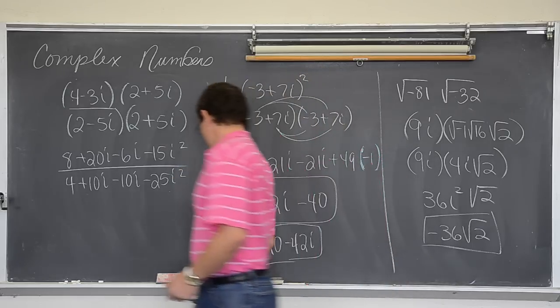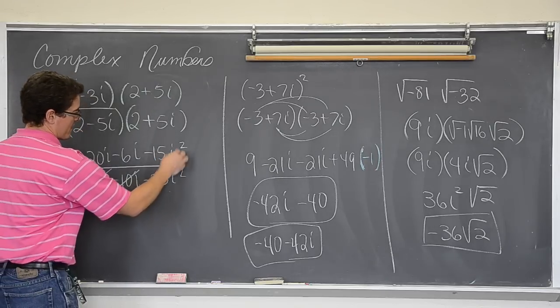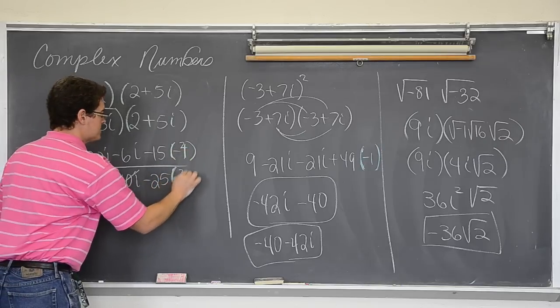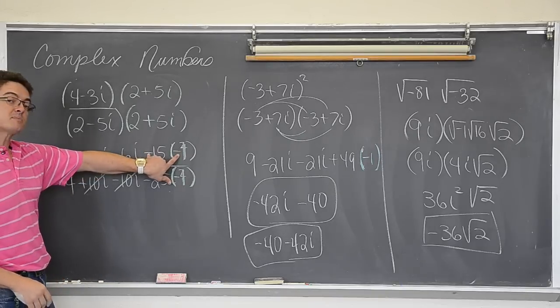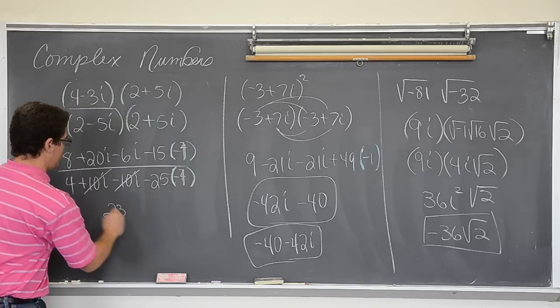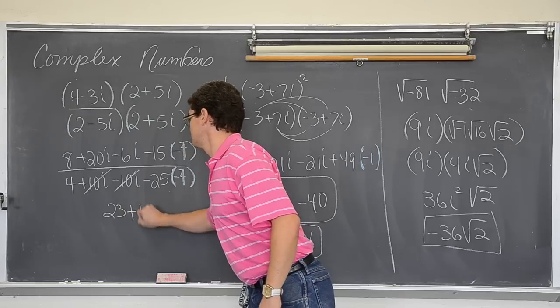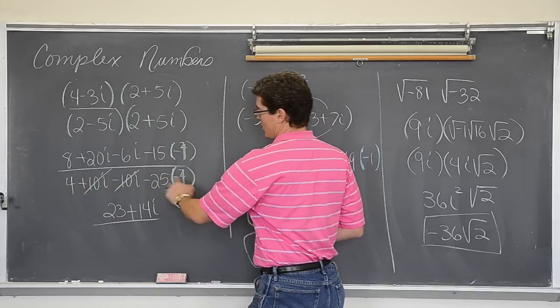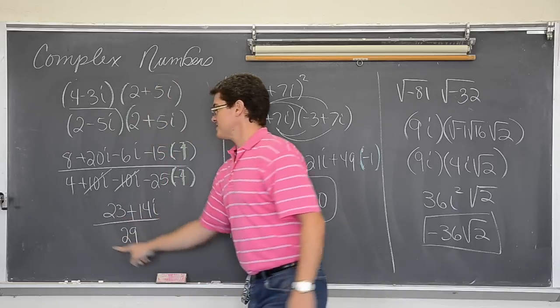So we have got the positive and negative 10 canceling out. And because of space I am not going to write a new line. But what is i squared? Negative 1. What is i squared? Negative 1. So we have 8 and that is positive 15, right? So 8 plus 15 is 23. What do we have here? We have 20 minus 6 is 14. Over 4, not minus, that is plus. So 4 and a positive 25 make 29.